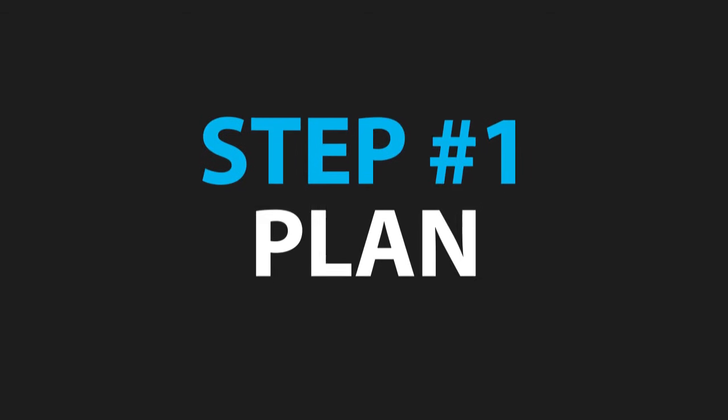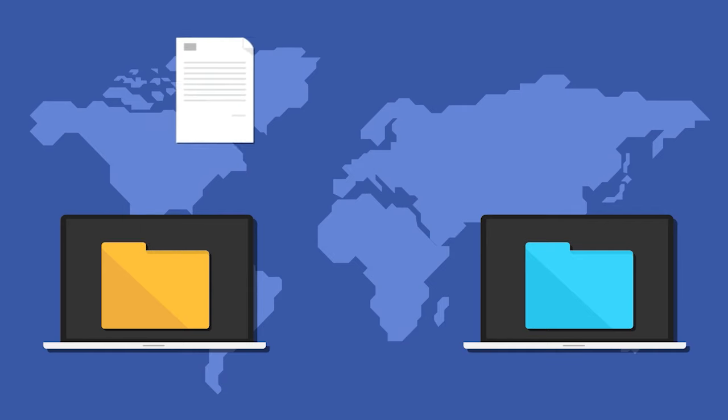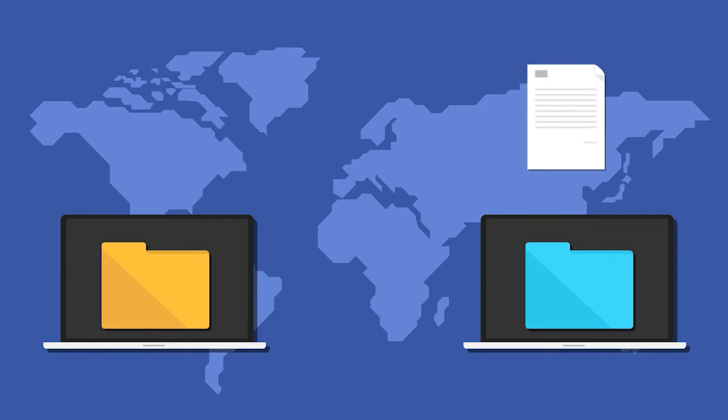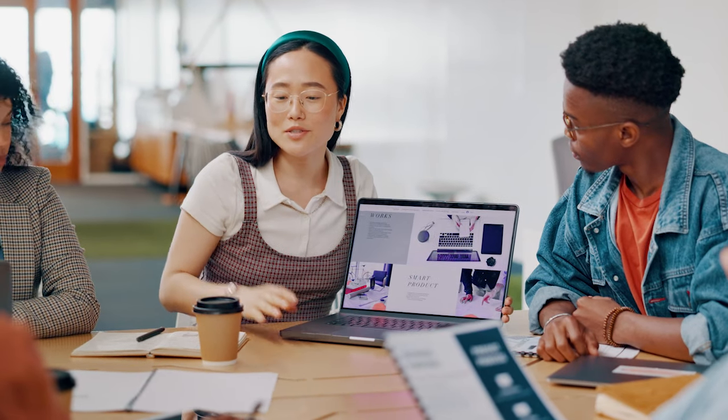Step number one is to plan. That's where we basically decide what this is going to be for. A general small business intranet is probably going to be just one site where everyone in the business can access. You may choose, if you're a franchise with franchisees, or have contractors you don't want to expose everything to, to have a second intranet for that specific purpose.